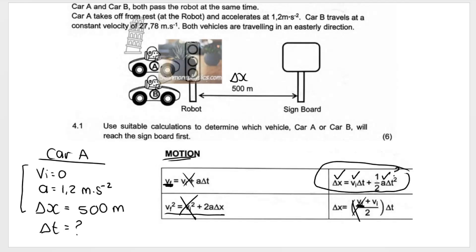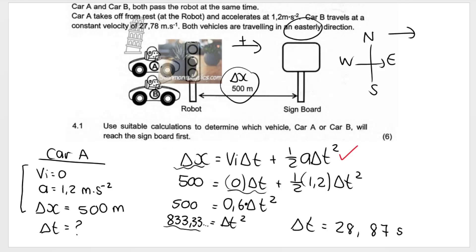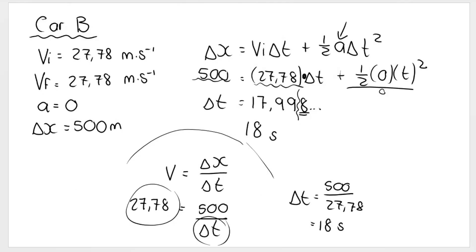So the question asks, which vehicle will reach the signboard first? It takes Car A 28.87 seconds. It takes Car B 18 seconds. That means that Car B gets there quicker, gets there in less time. Therefore, Car B will reach the signboard first.